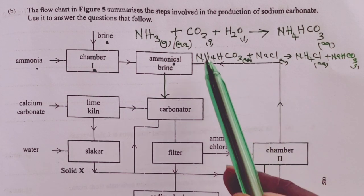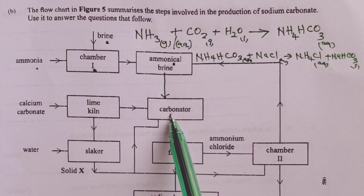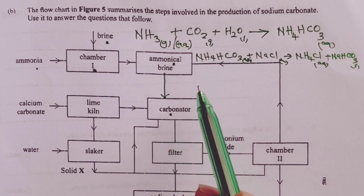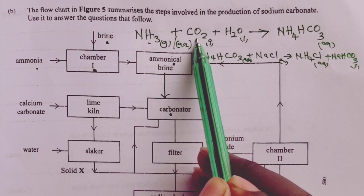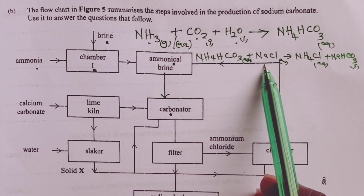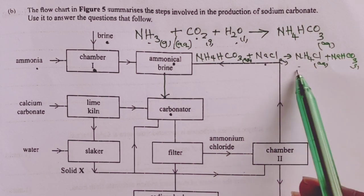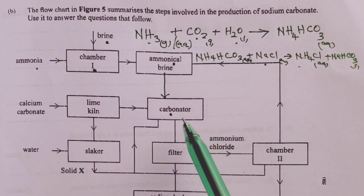These are the two equations that take place in the carbonator, but we can also combine the two to get an overall equation, where we shall have ammonia reacting with carbon 4 oxide, water, and sodium chloride to now form the two final products.